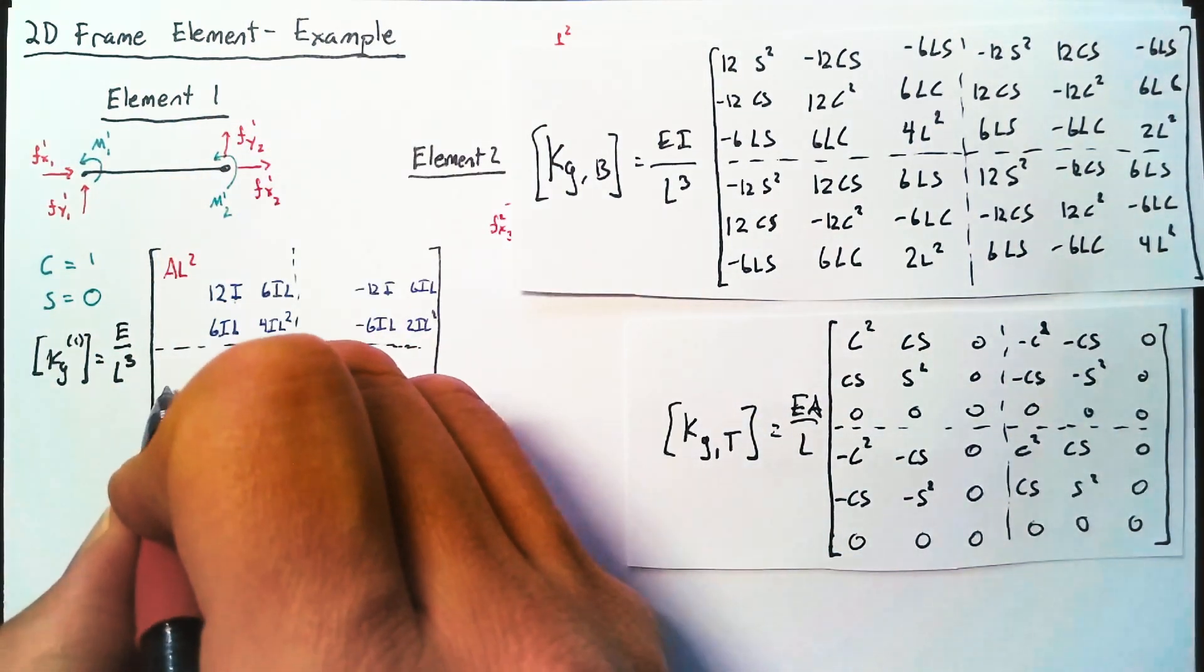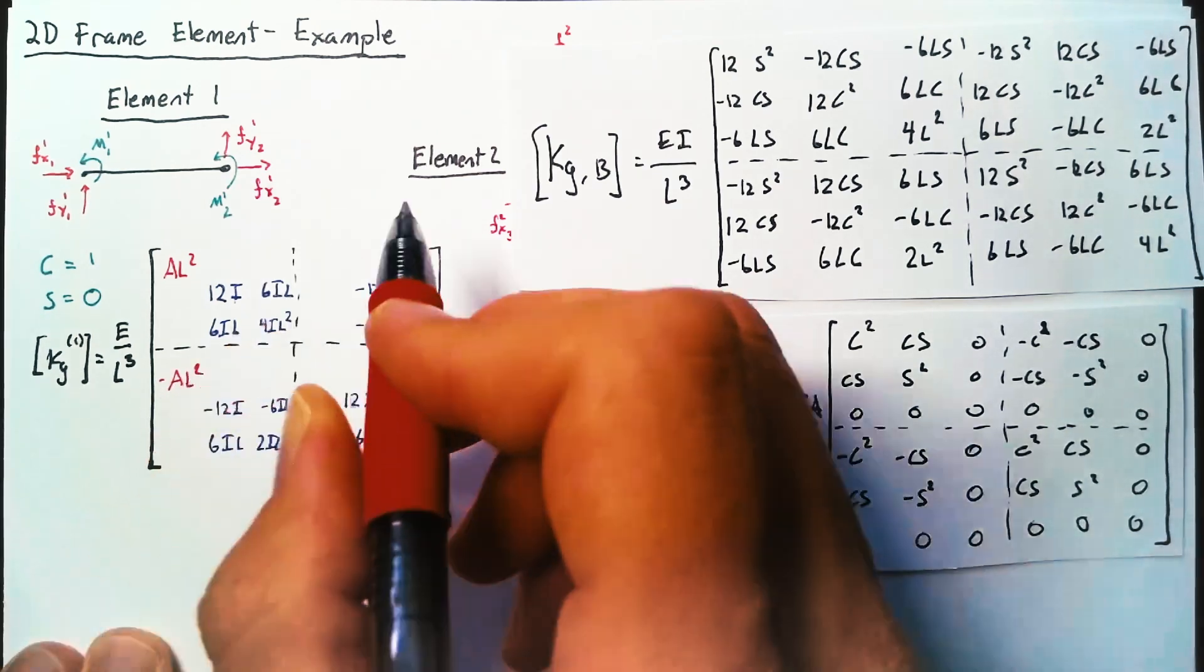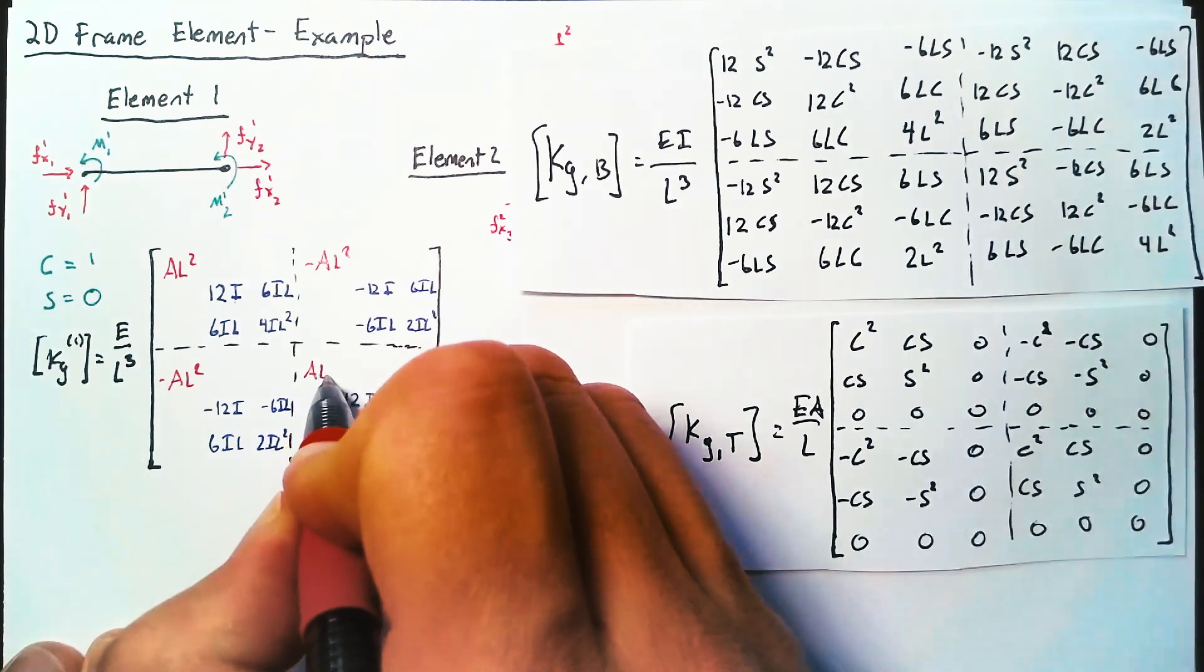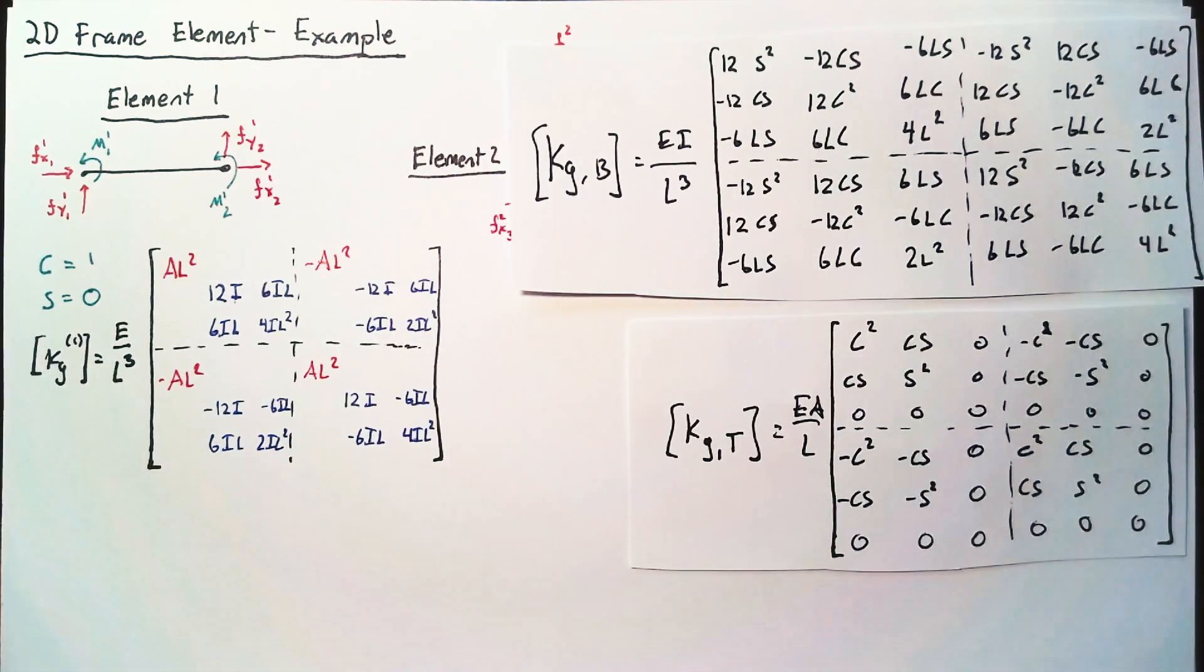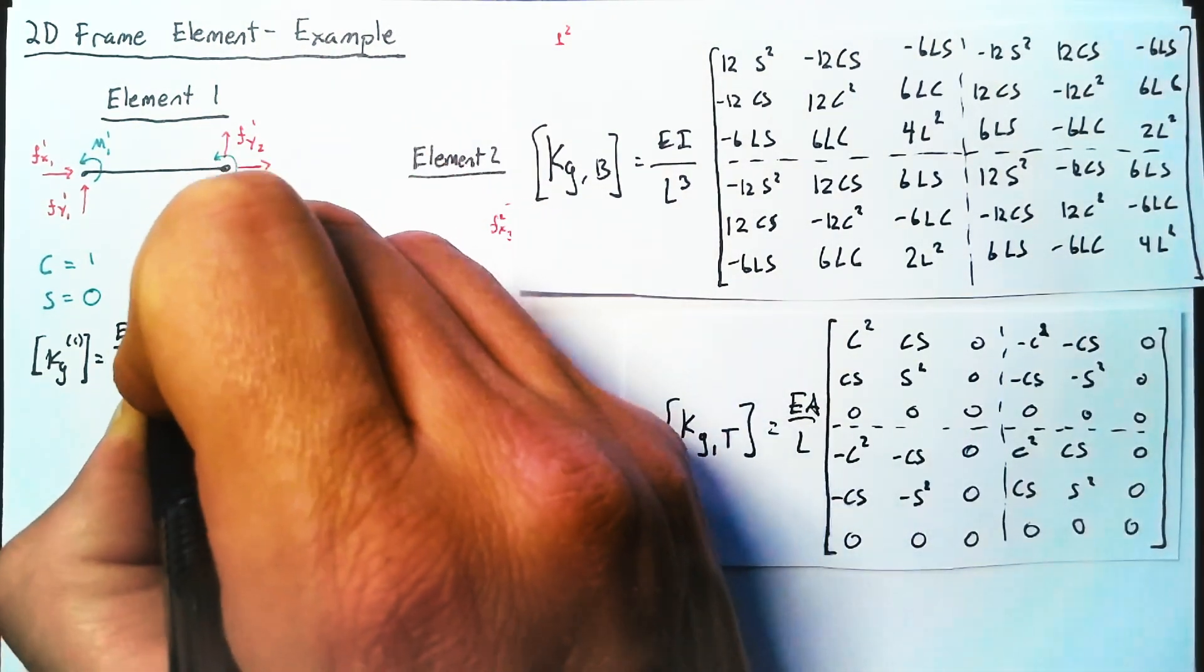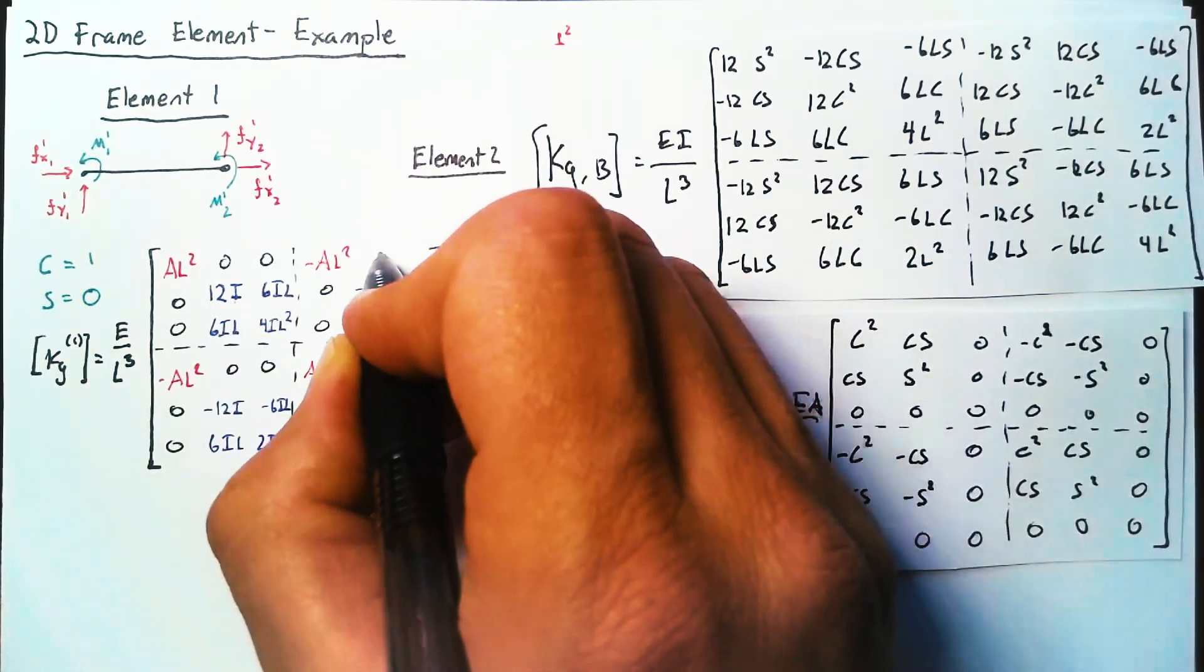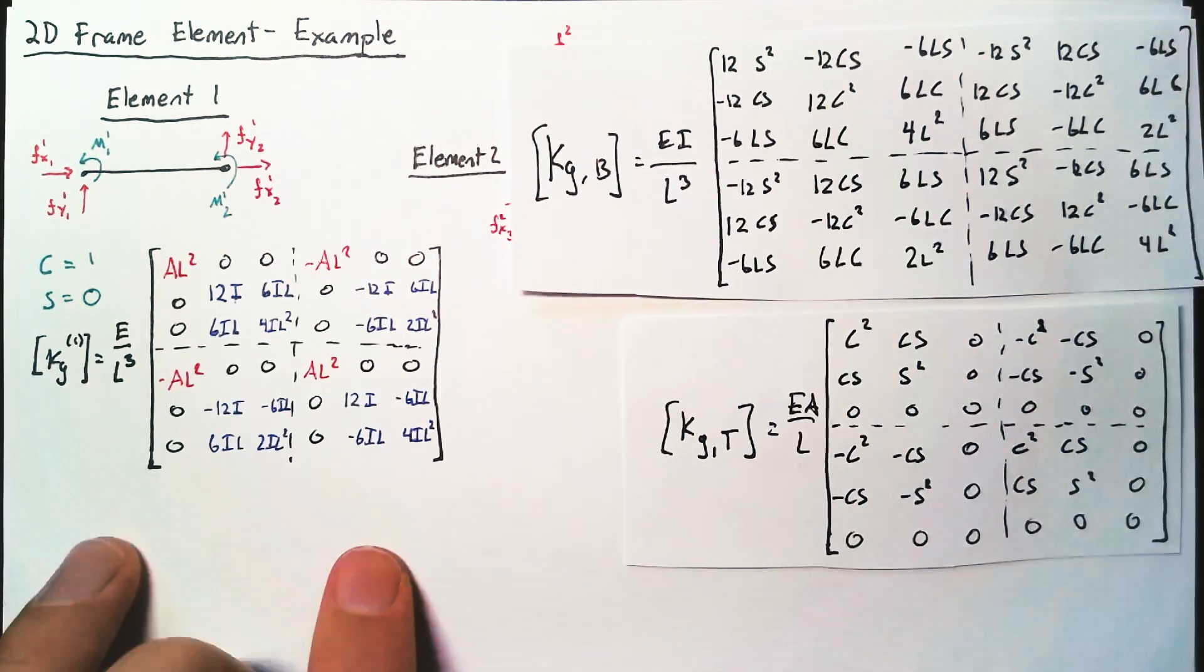And then down here in the 4,1 spot, we'll have a negative AL squared. 1,4 will be the same. And then the 4,4 spot will have AL squared again. And finally, we can close this out with our zeros. And that will be the stiffness matrix for element 1.